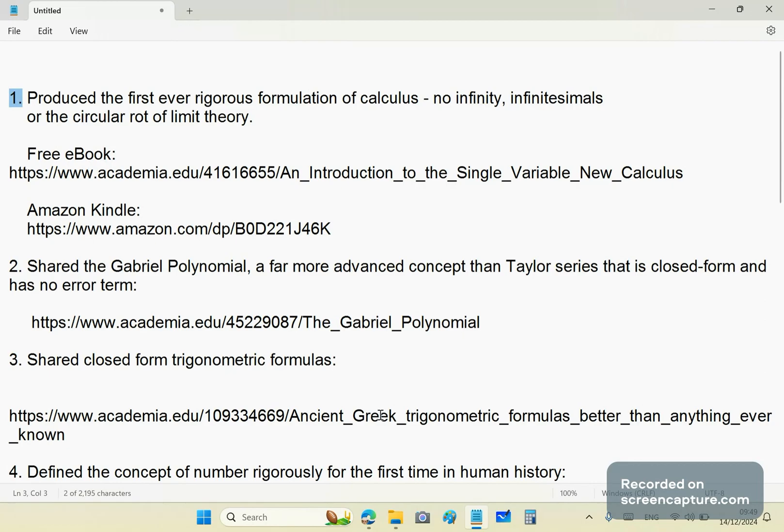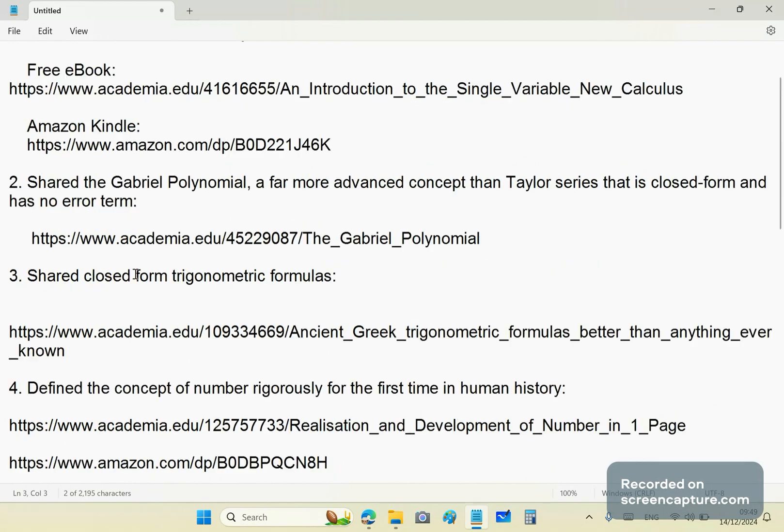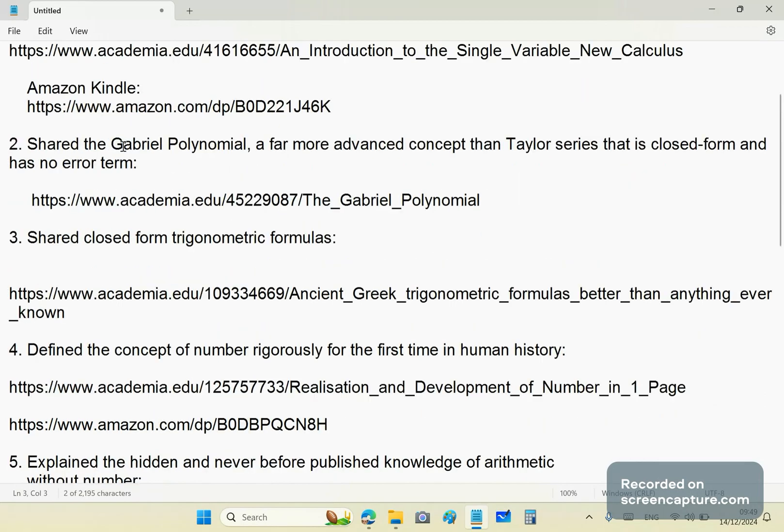Now, the second greatest accomplishment is that I discovered the Gabriel polynomial. And yes, I would call it Gabriel, you fucking morons. Do you think I'd name it after one of you idiots? Really? I mean, some clowns get on here and say, oh, you're narcissistic because you called it the Gabriel polynomial. What would I call it? The Andrew Wiles polynomial or the Terence Tao polynomial or the Gilbert Strang polynomial? None of those fucking idiots ever came close to discovering it. Why would I call it after them? I call it after myself because I'm a genius.